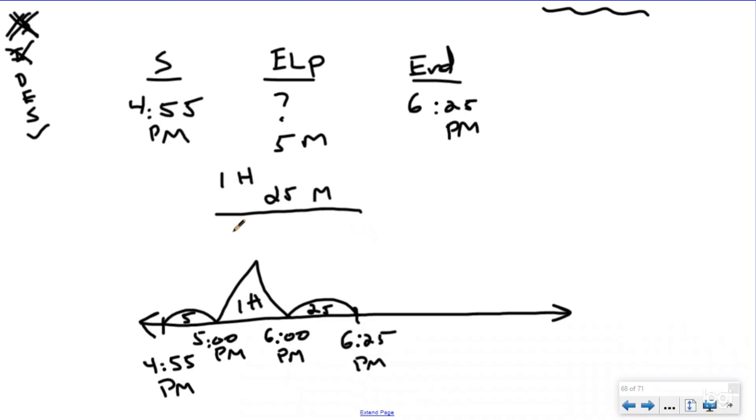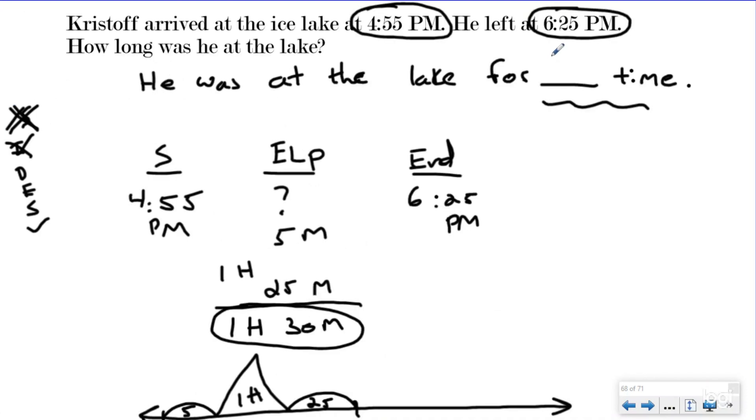I just need to add up my elapsed time, which is going to be one hour and 30 minutes. Or in other words, one and a half hours. So he was at the lake for one hour and 30 minutes. Here's our You-try.